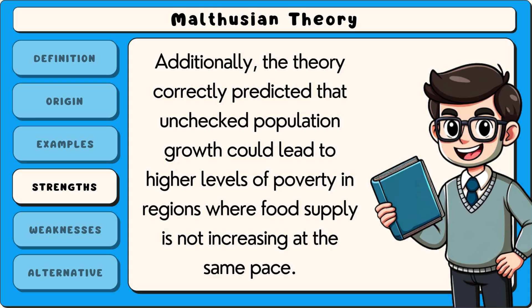Additionally, the theory correctly predicted that unchecked population growth could lead to higher levels of poverty in regions where food supply is not increasing at the same pace.